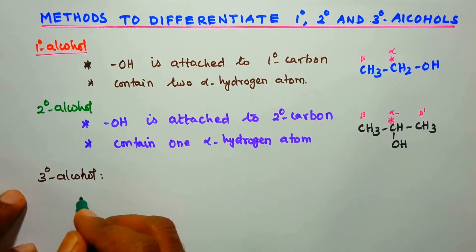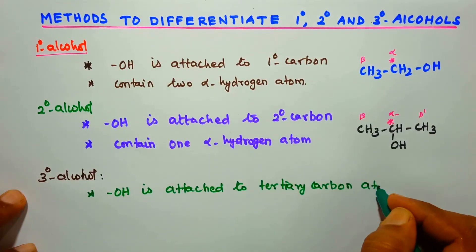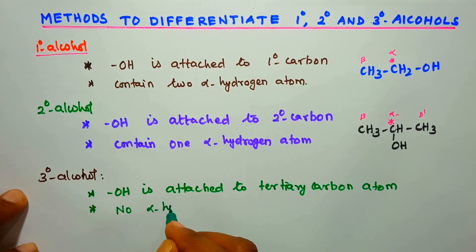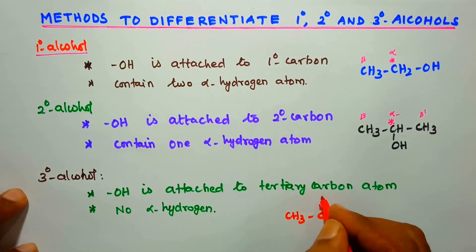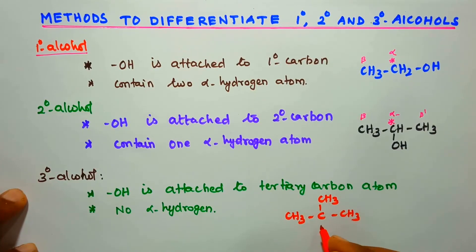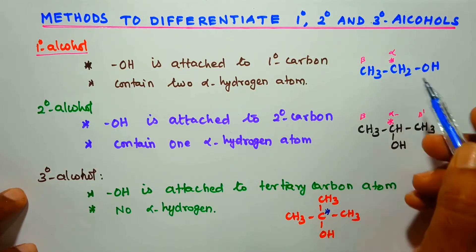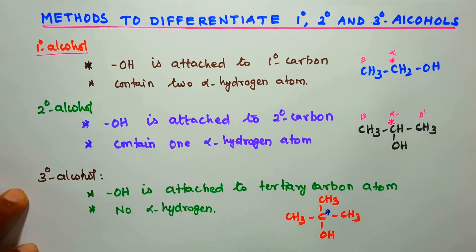Next is tertiary alcohol. Tertiary alcohol is attached to a tertiary carbon atom, where the carbon bearing the functional group contains no alpha hydrogen atom. For example, (CH3)3C-OH — this carbon is tertiary with no alpha hydrogens. To summarize: 2 alpha hydrogens = primary alcohol; 1 alpha hydrogen = secondary alcohol; no alpha hydrogen = tertiary alcohol.